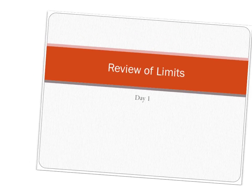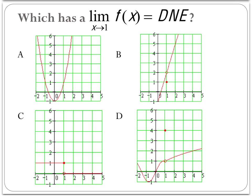Welcome to AP Calculus, and we're going to review some limits from last year. We have four graphs of limits, and the question is: which one of these graphs has a limit as x approaches 1 of f of x in which the limit does not exist?